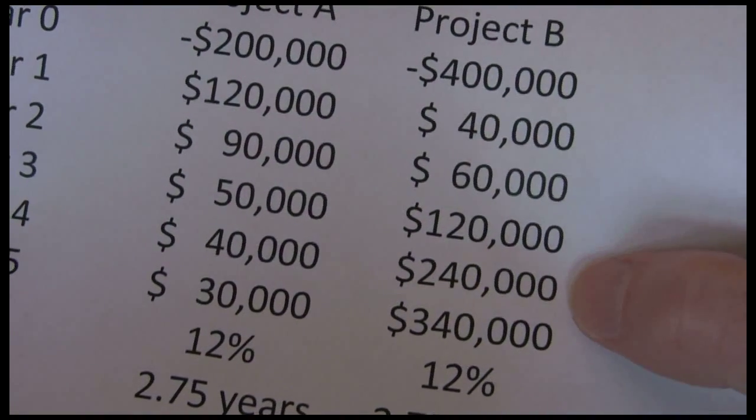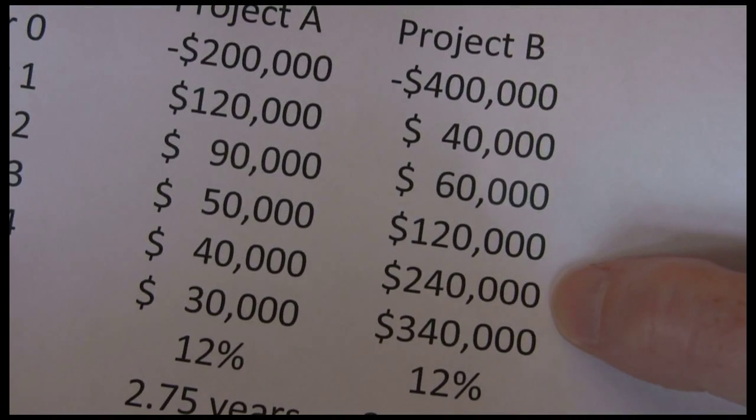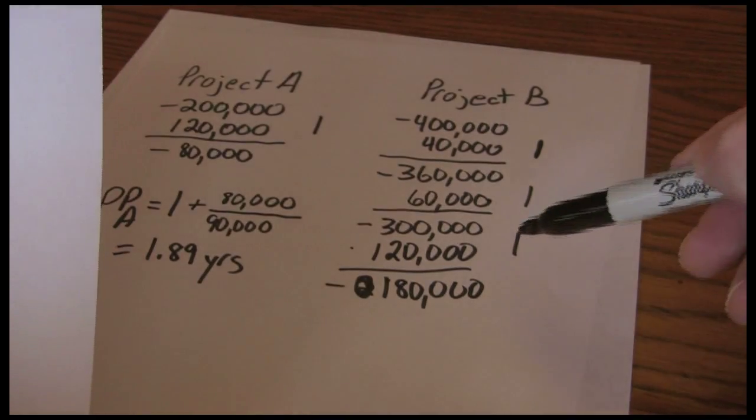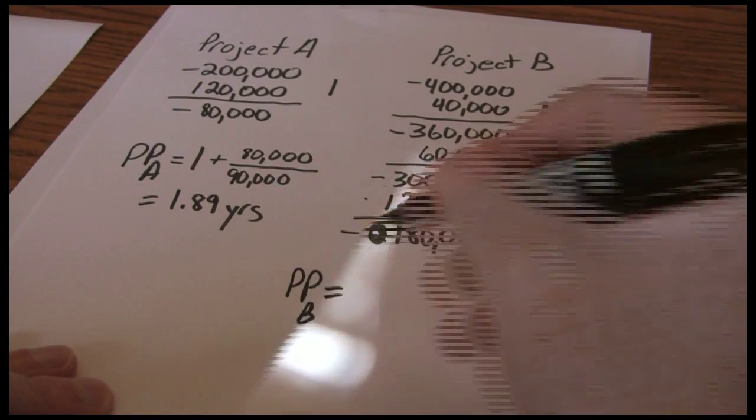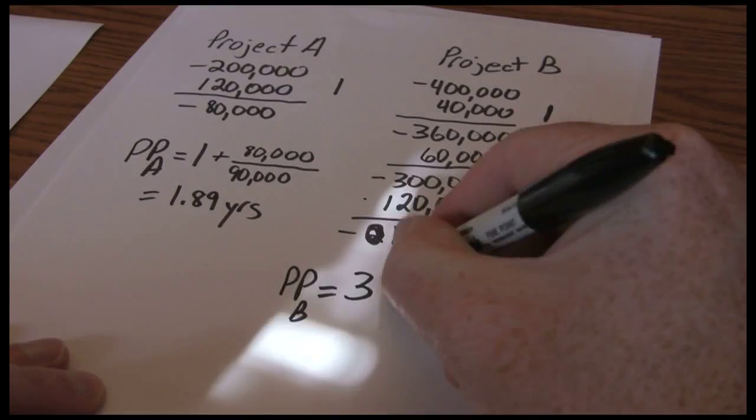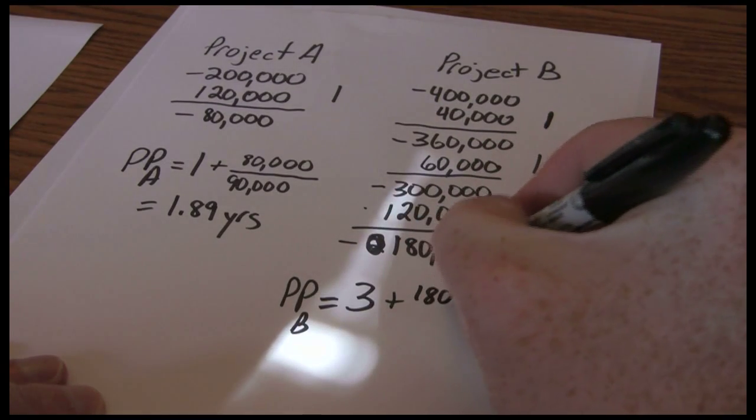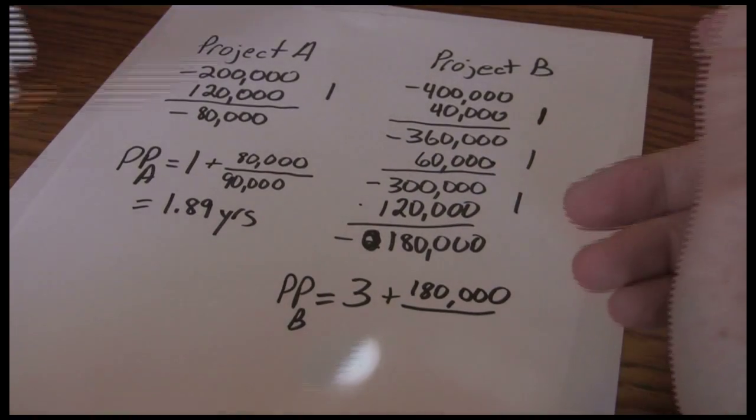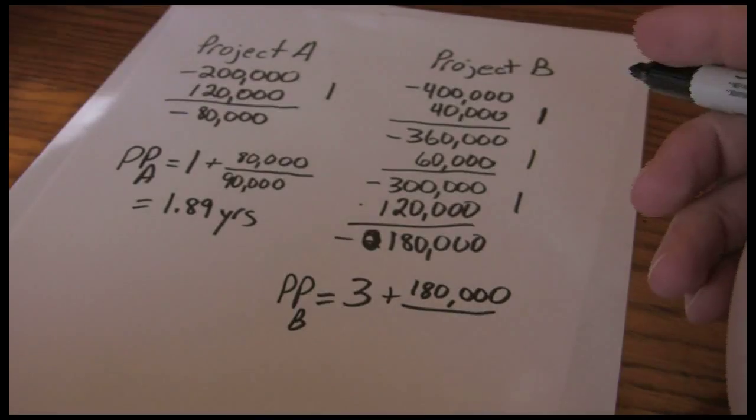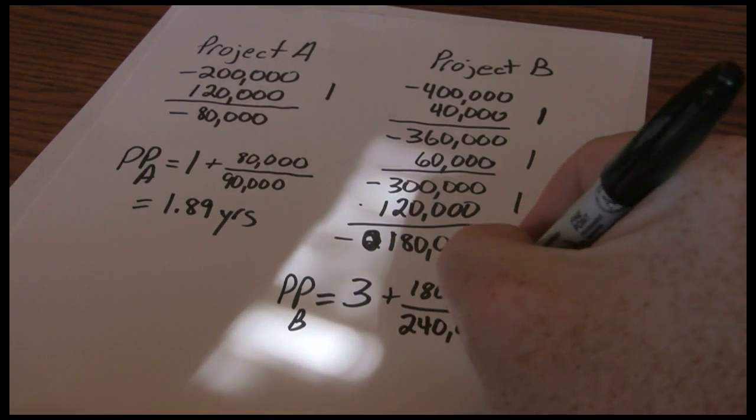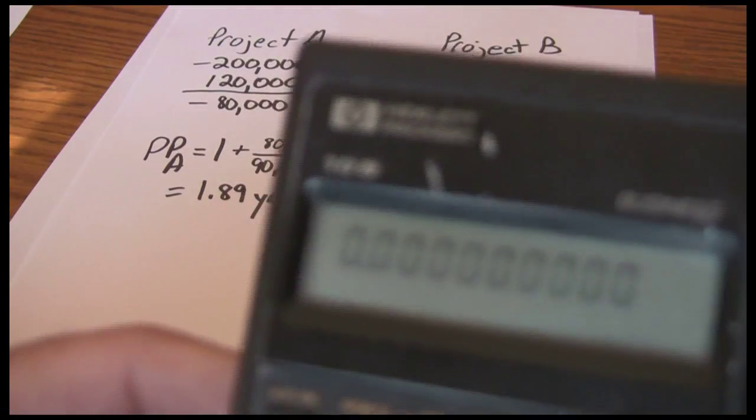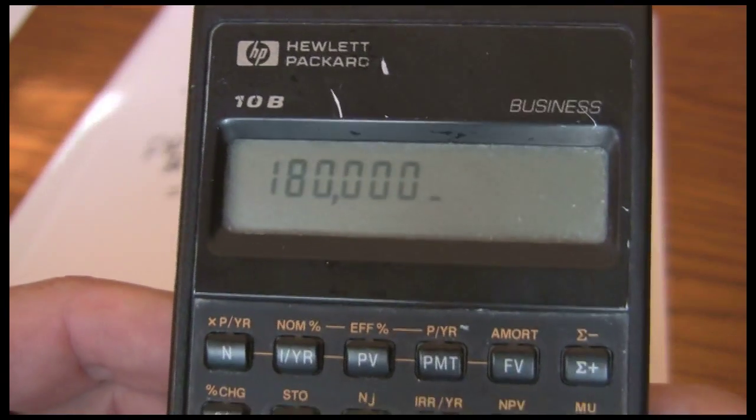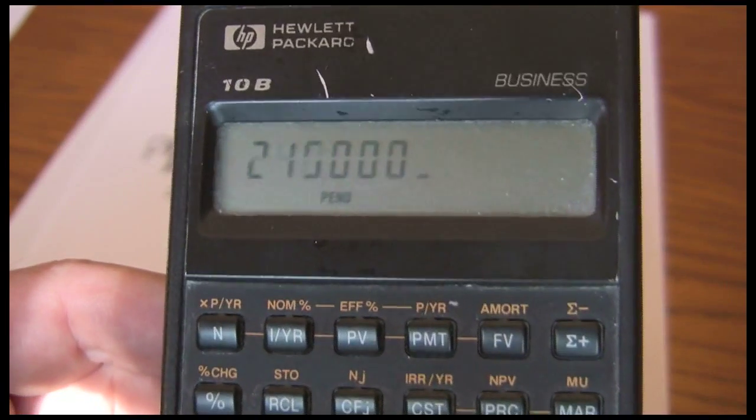In year four, you can see we're going to get more than that $180,000. So it's not going to take us four full years to get the payback period. It's going to be three full years plus a fraction of that fourth year. So our payback period for Project B is the three full years that we counted, plus the $180,000 that we have left to recover, divided by the $240,000 that we're going to earn in year four. So we just take that $180,000 divided by $240,000, add three, and our payback period is 3.75 years.